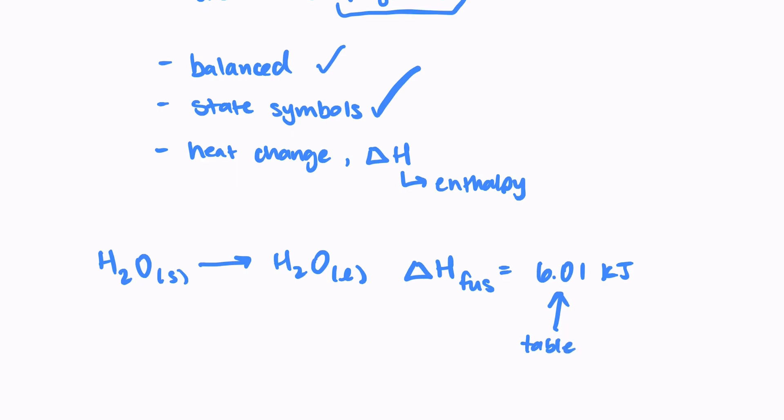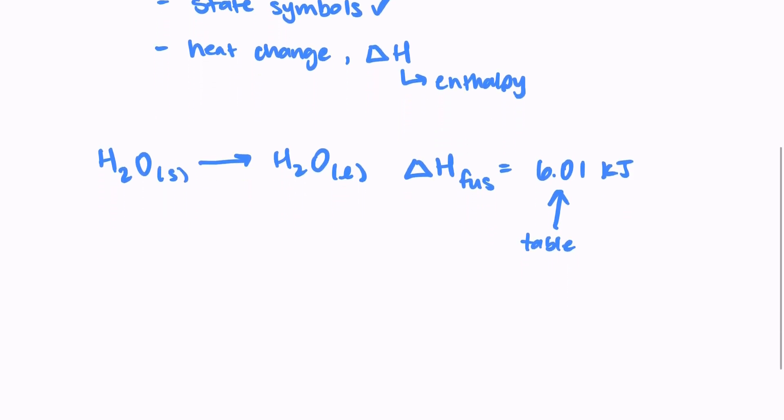This is a value you would get from a table. This is not something that you would intuitively know just looking at this equation. It's not something you would need to memorize either. All of these values for enthalpy changes are tabulated. So you would have access to those on a test or something like that.